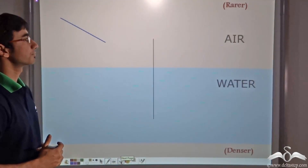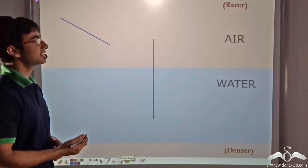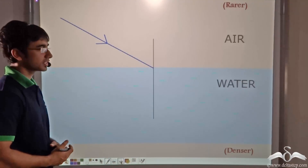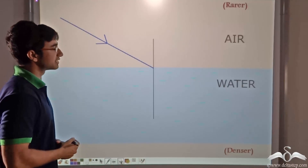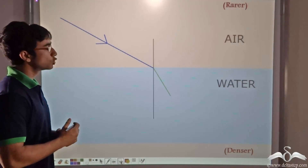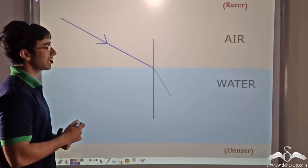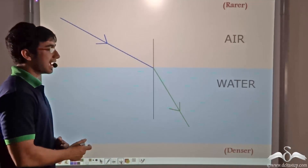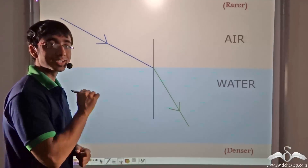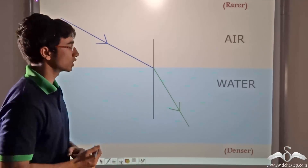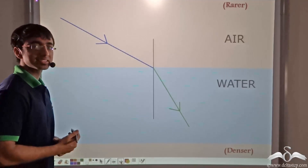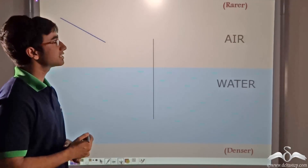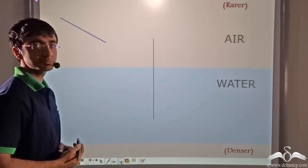Now notice this animation closely. A ray of light is incident from a rarer medium — that is, air — to a denser medium — that is, water. At the point of incidence, a perpendicular has been drawn. You will notice that after refraction, the light ray bends towards the normal. It shifts towards the normal and this refracted ray continues in a downward path in a straight line inside water. When light is moving from a rarer medium to a denser medium, it bends towards the normal after refraction.